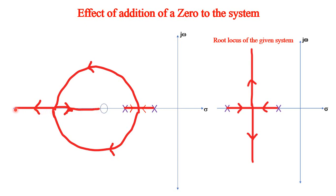One closed loop pole has reached the open loop zero; another has reached negative infinity. The system stability has improved. Not only that, since the poles have become more negative in their real part, and the zero is more negative than the original pole positions, the transient response has also improved - settling time depends on the real part of the dominant root, which has become more negative. Therefore, stability as well as transient response have improved.